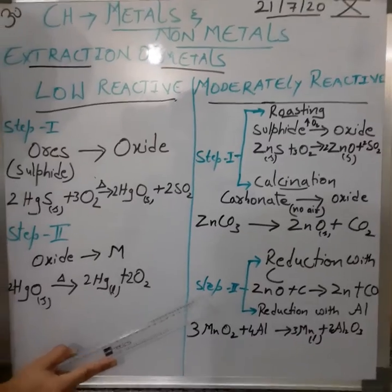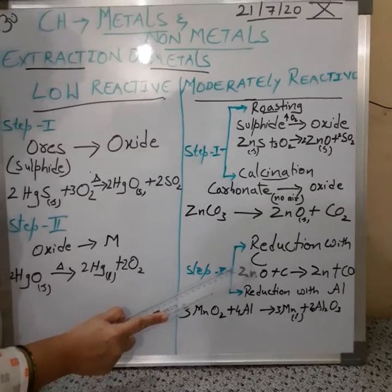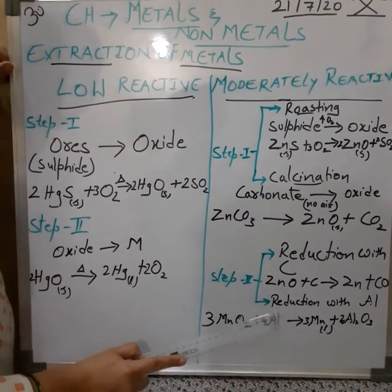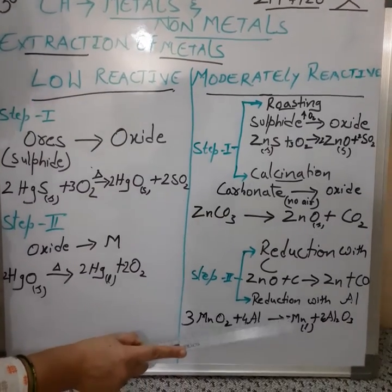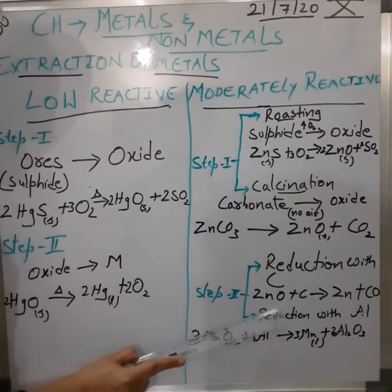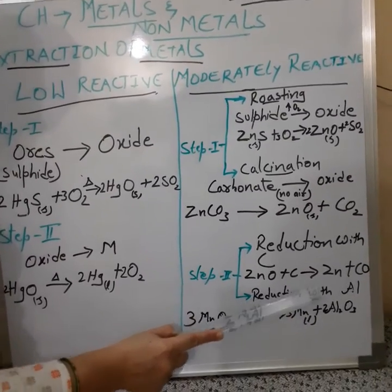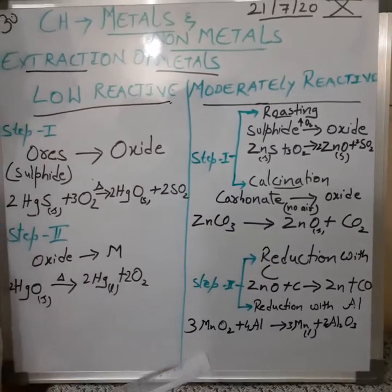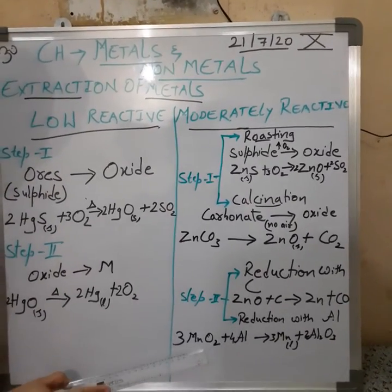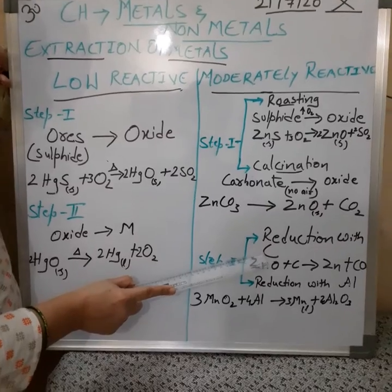Step two for moderately reactive metals involves two methods of reduction. One is reduction with carbon in the form of coke. The other is reduction with the highly reactive metal aluminium. Reduction with carbon: zinc oxide reacted with coke results in the formation of zinc and release of carbon monoxide. Reduction with aluminium is used for metals which cannot be reduced by carbon.